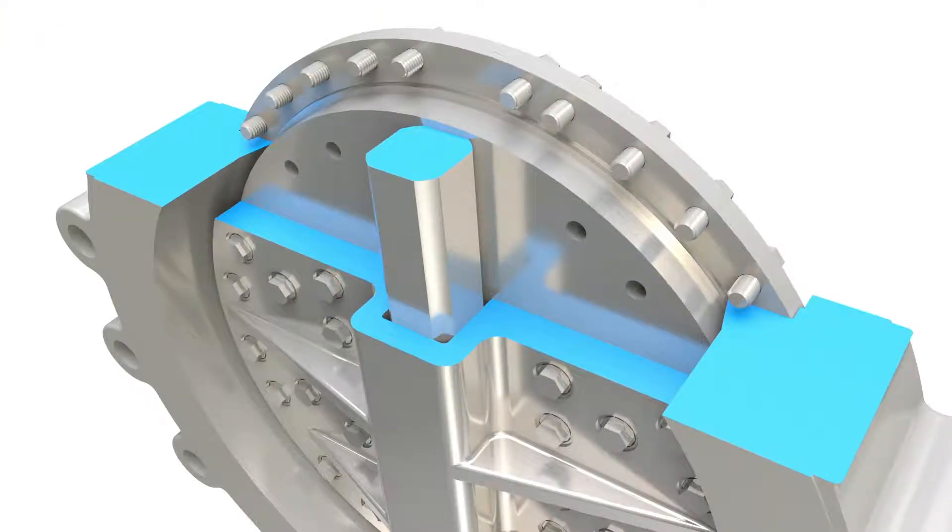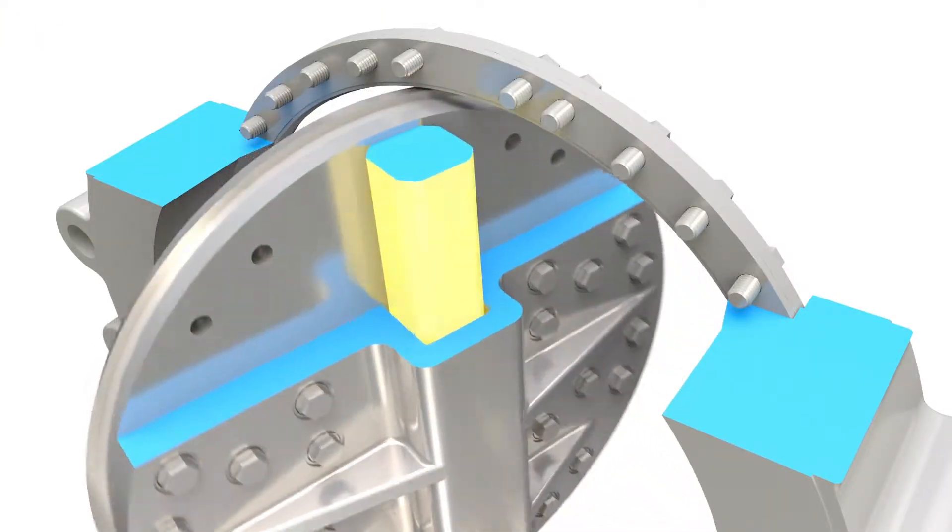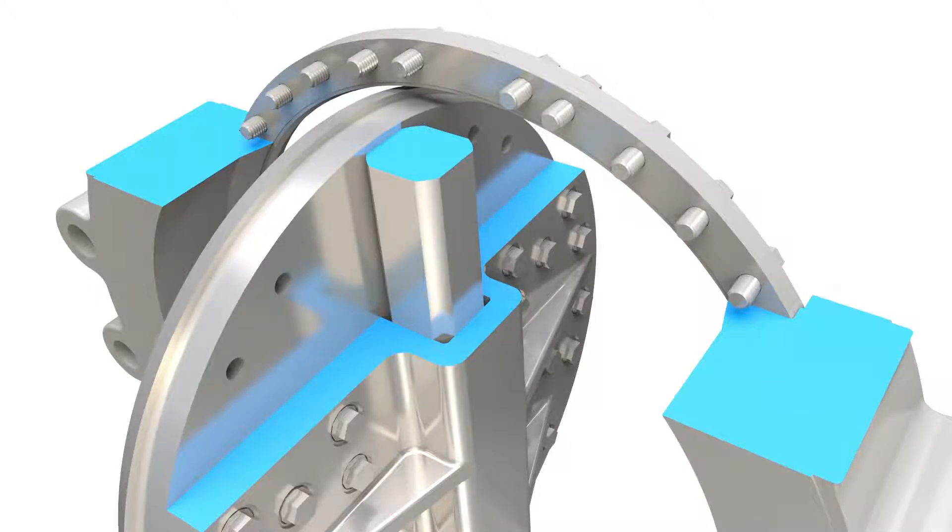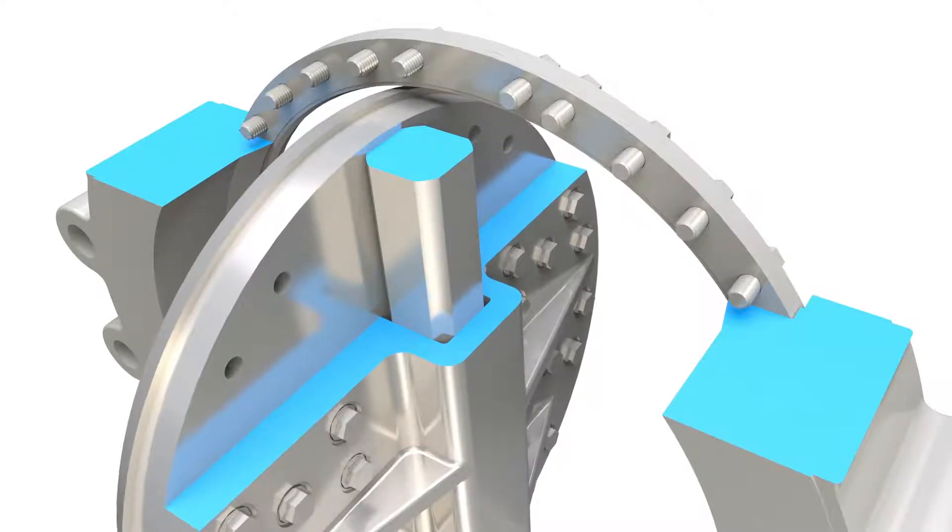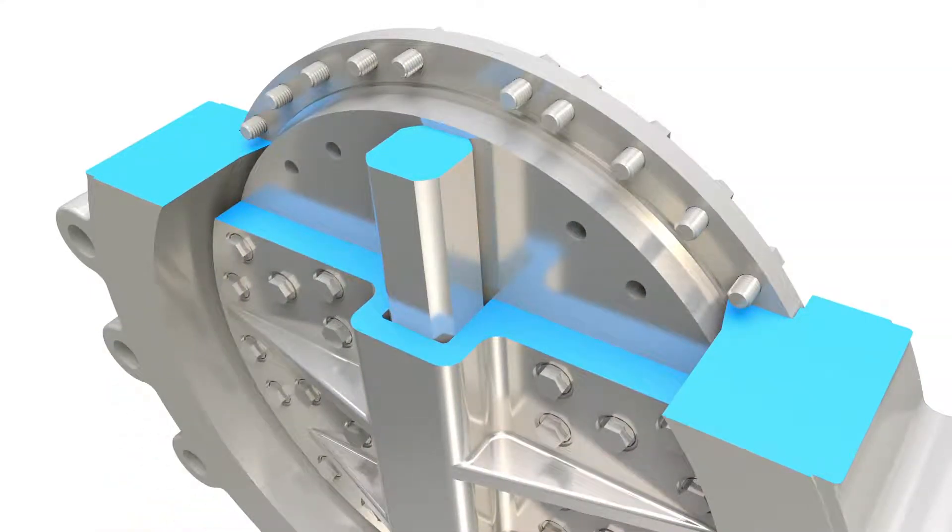The square shaft eliminates backlash with torsional stress distributed over multiple areas, unlike keyed or pinned designs that could be compromised over time.